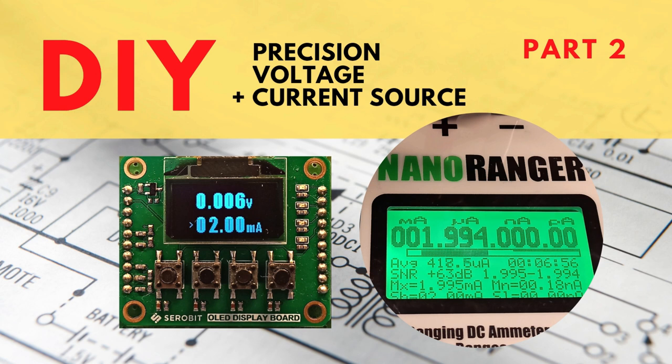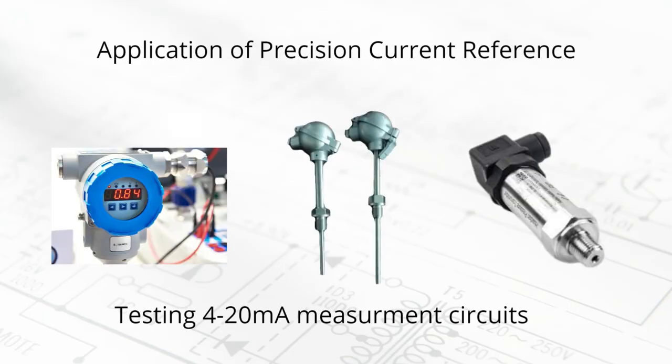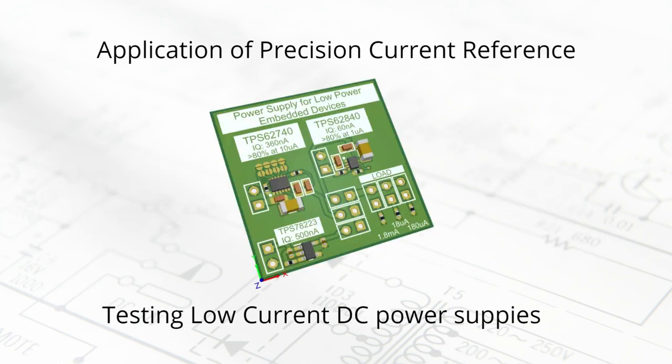In this video I will show you how I added a second channel as a current reference to my precision voltage reference project. You can set the current from 0 to 25 milliampere with a resolution of 0.01 milliampere. A precision current reference is very useful, especially when building devices like industrial process controllers or monitoring devices that take 4 to 20 milliampere transmitters as input, like flow transmitters, temperature transmitters, and level transmitters.